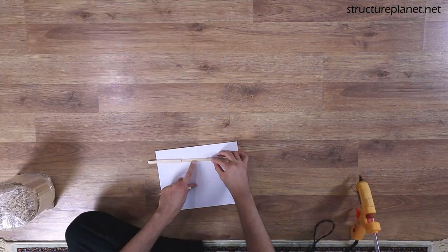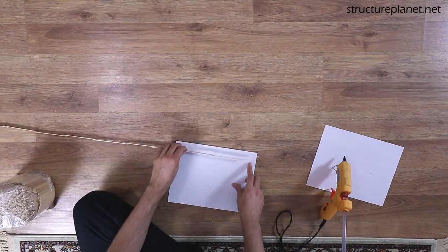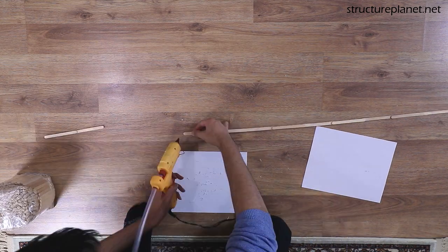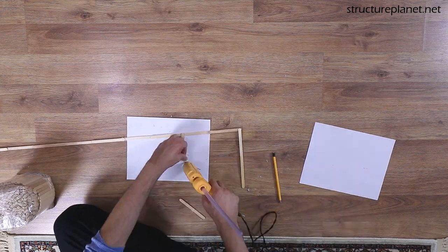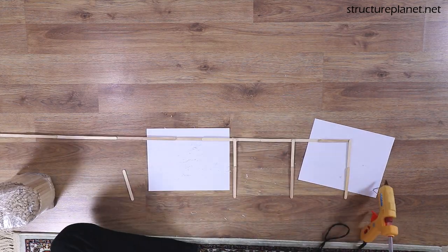I start by making the top cord. I will then add some of the vertical members, then the bottom cord, followed by the remainder of the vertical members, and finally the diagonal elements.